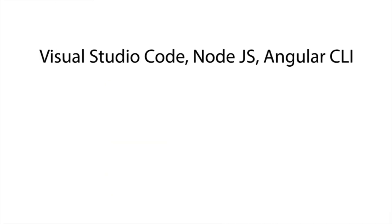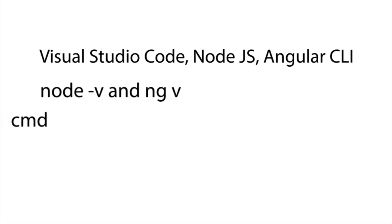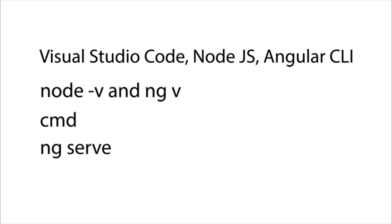To recap, we went through how to install Visual Studio Code, Node.js, and the Angular command line interface tool. We learned how to use the node -v and ng -v commands to check the installed versions. We learned how to open the command prompt by typing cmd in the file explorer address bar, and how to start a local server to host our Angular web application so we can view it in the browser. We also learned how to open VS Code by running the code period command. Thank you for watching, see you in the next video. If you have questions, leave a comment — please like and subscribe for more videos.